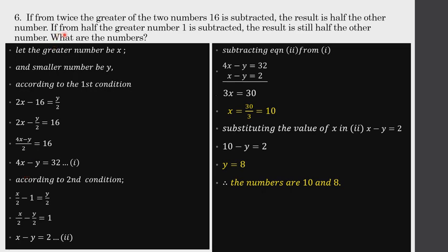In the second part: if from half the greater number 1 is subtracted, the result is still half the other number. Half of the greater number x, minus 1, also gives us y by 2. So x by 2 minus 1 equals y by 2. Solving this gives x minus y equals 2. This is the second equation.